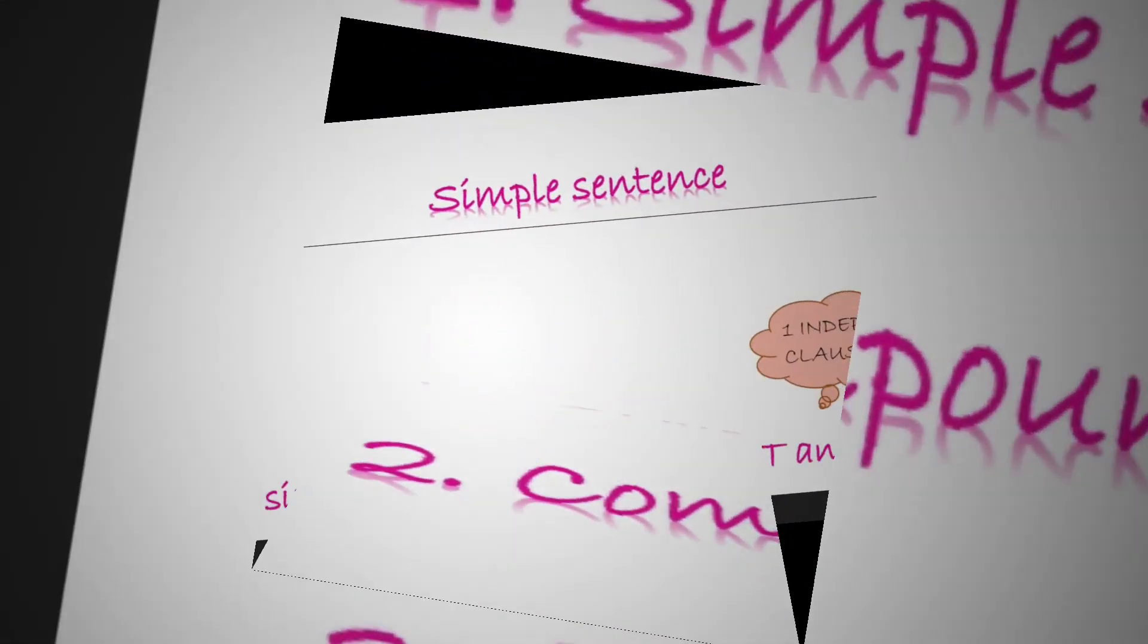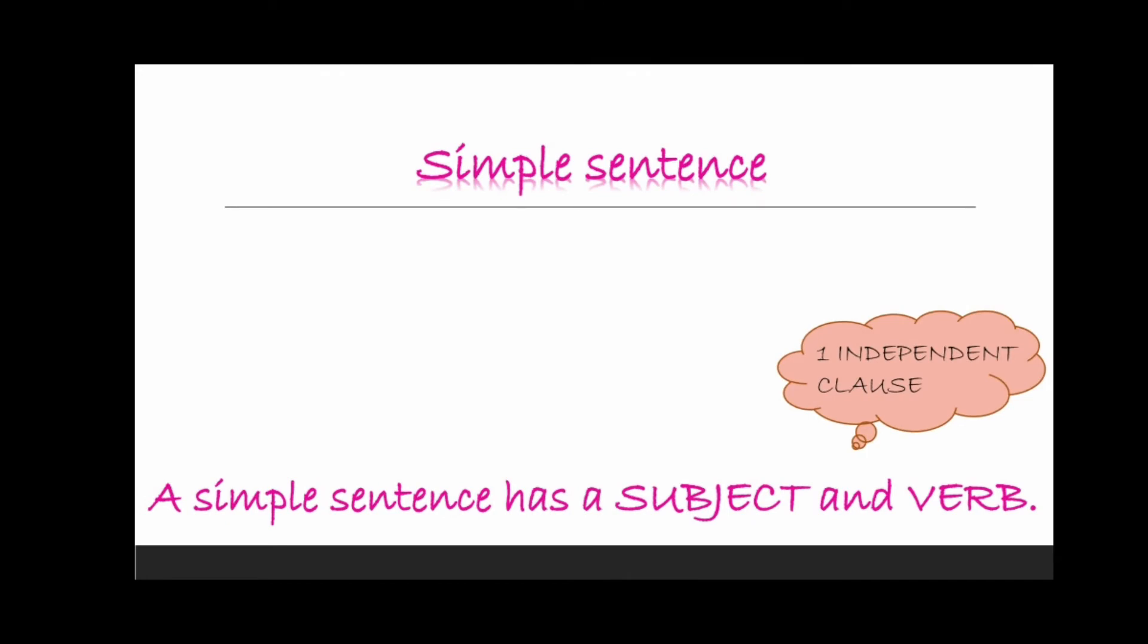In the simple sentence, we can see that it is having one independent clause. That means this sentence will be complete in itself and it won't require any other clause. And this sentence will have one subject and one verb. Let us see the example. She took a cab to the airport. Now here we have she as a subject and took as a verb and the sentence is complete in itself. So this is the simple sentence.